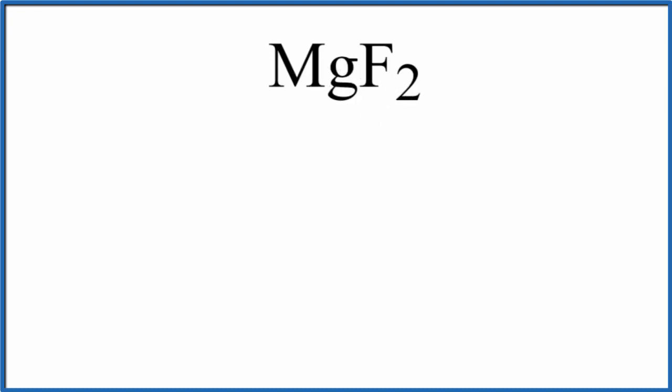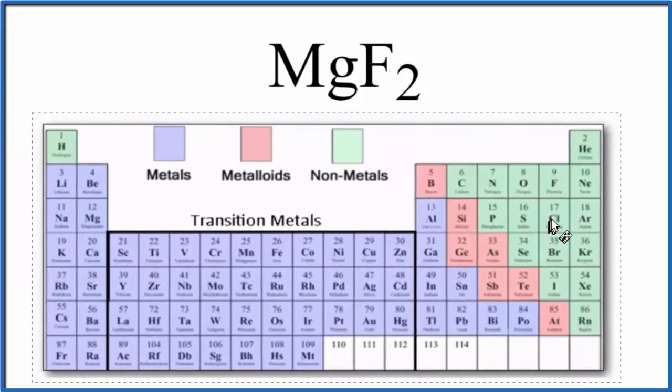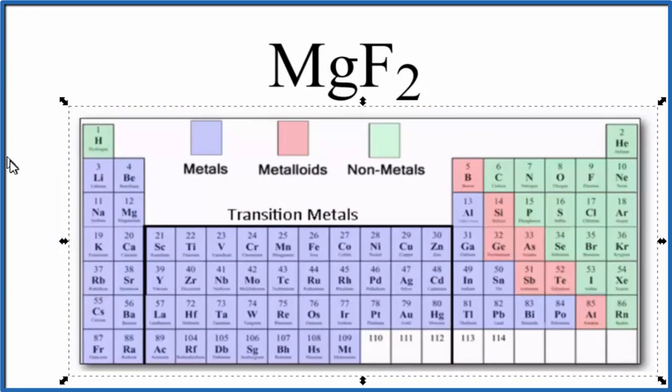The first way is we could look at the periodic table divided into metals and nonmetals. So here's the periodic table.